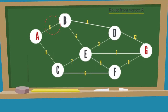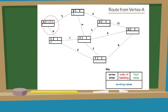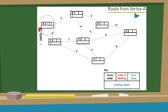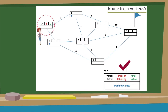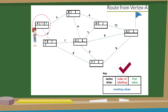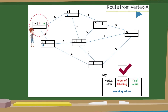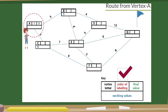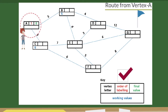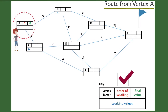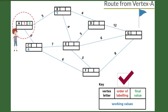First, redraw the diagram replacing circles showing nodes with keys as shown on the board. In the key, the first box from the right is the vertex label. The second is the order of labeling — the sequence in which the nodes are selected. The working value is the total distance from the starting point to a particular node. The final value is the least cost from the starting point to a particular node or vertex.